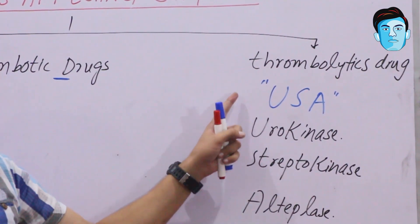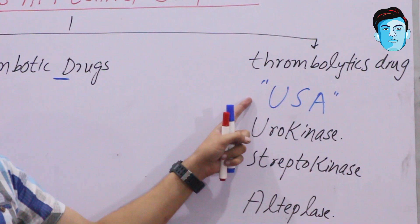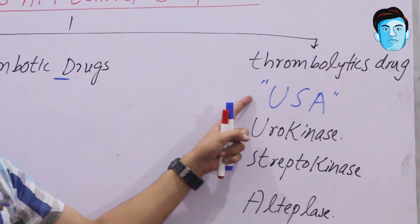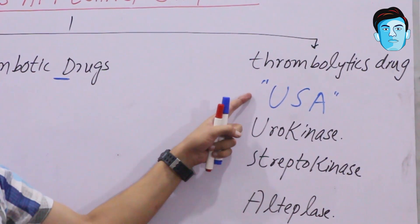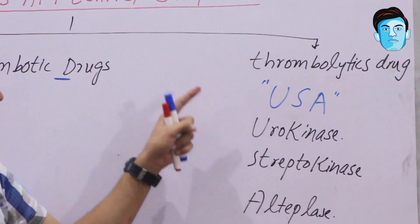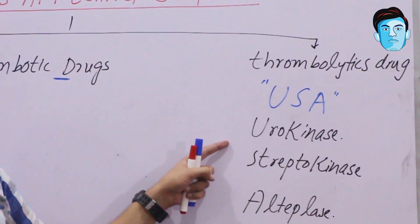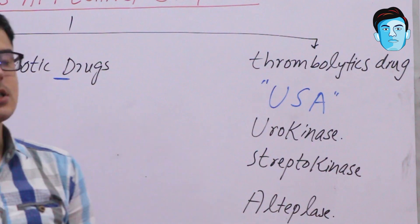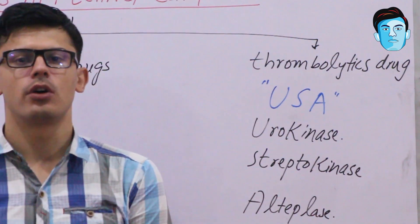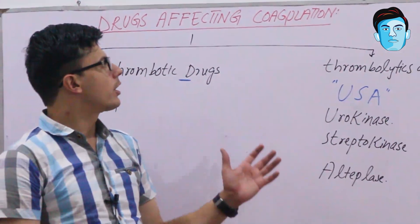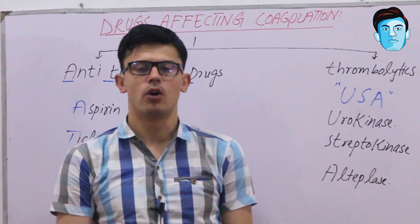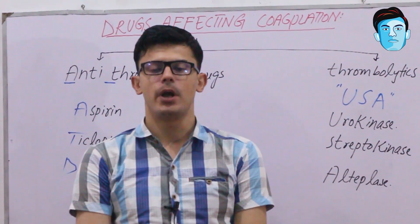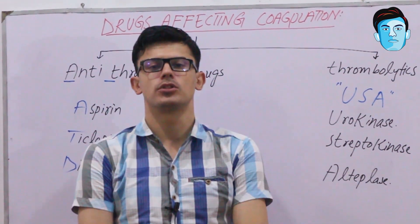For thrombolytic drugs, recall the trick USA: U for urokinase, S for streptokinase, A for alteplase. This is a short video regarding drugs affecting the coagulation. Hopefully you will like the video — if you do, make sure to subscribe to our channel and share it with your friends. Thank you.